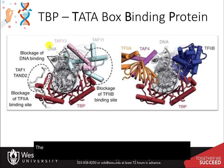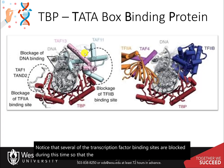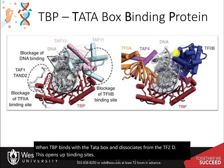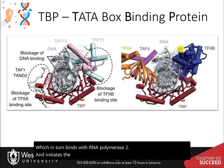The diagram on the right shows TF2D in scanning mode. Notice that several of the transcription factor binding sites are blocked during this time so that the pre-initiation complex won't form inappropriately. When TBP binds with the TataBox and dissociates from TF2D, this opens up binding sites for transcription factor 2B, which in turn binds with RNA polymerase II and initiates the formation of the pre-initiation complex.